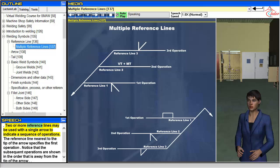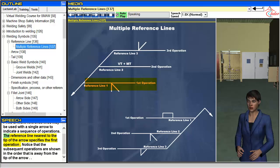Two or more reference lines may be used with a single arrow to indicate a sequence of operations. The reference line nearest to the tip of the arrow specifies the first operation. Notice that the subsequent operations are shown in the order that is away from the tip of the arrow.